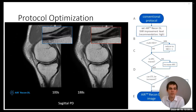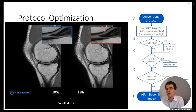Pulsatile motion artefacts may be slightly more visible on the ARDL image, potentially due to having NEX 1 instead of 2, as there's less opportunity for flow artefacts to average out. The sagittal PD fat-sat went from around 250 seconds to 160 seconds. The sagittal PD ARDL image acquired in 100 seconds versus 188 seconds shows a meniscal tear, with the ARDL image showing better contrast resolution for that tear.